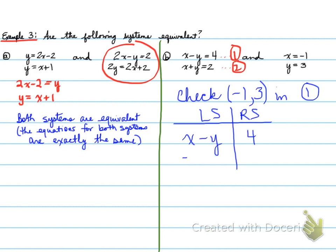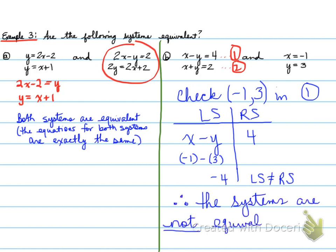Lo and behold, you get negative 4, folks. What does negative 4 equal 4? Hopefully you're thinking nope, and you're right, it doesn't. Left side does not equal right side. So you're basically looking at this symbol. This means does not equal. You have an equal sign with a slash through, it means does not equal. And therefore, the systems are not equivalent. And that's the end of that one.